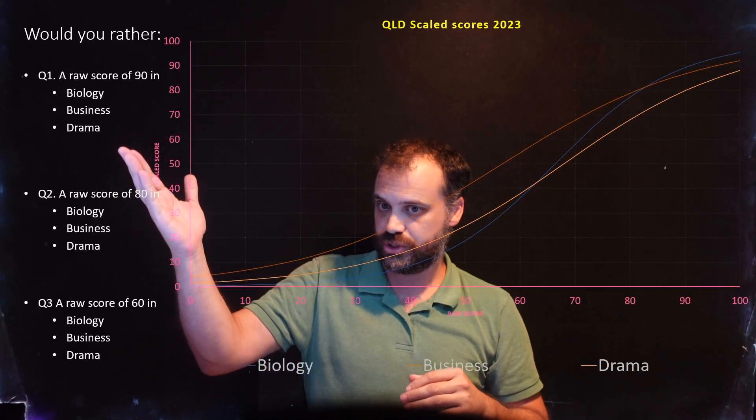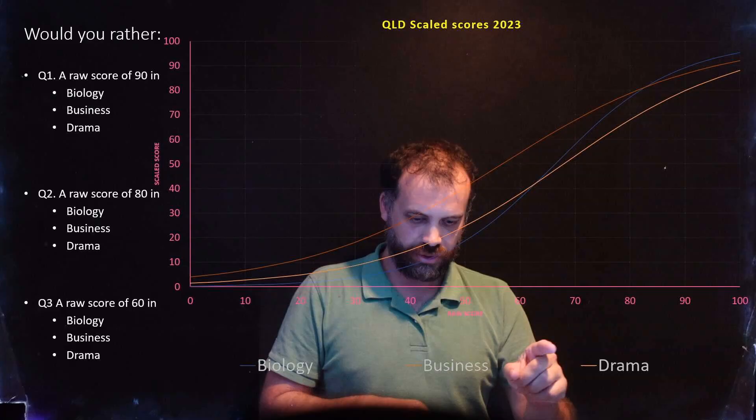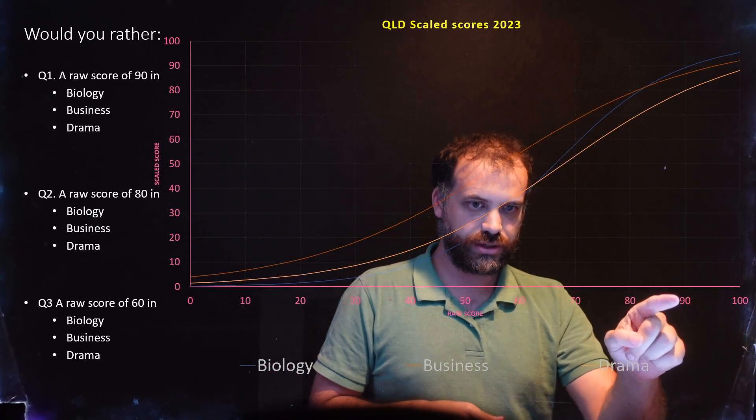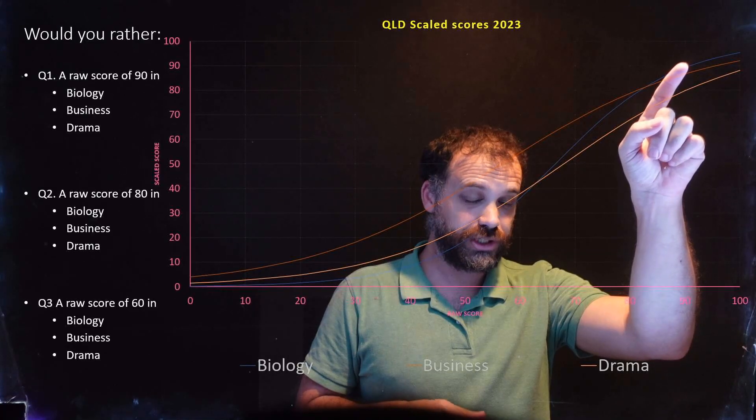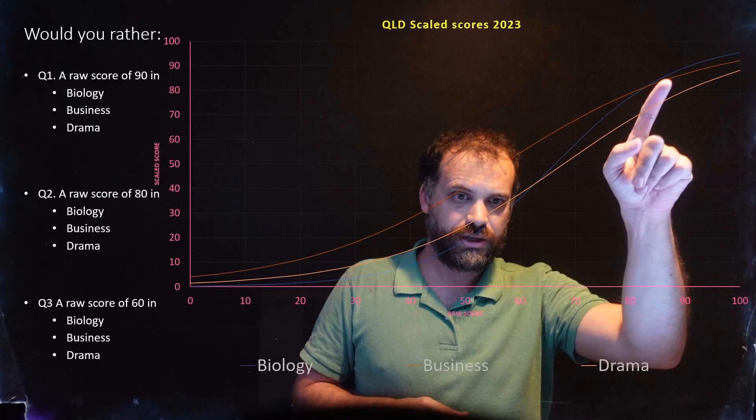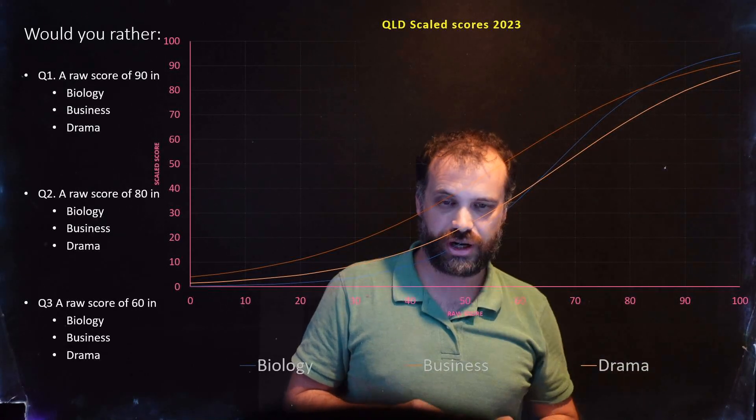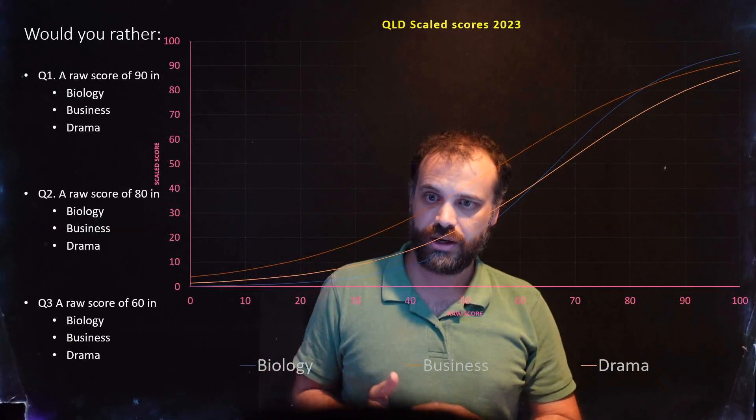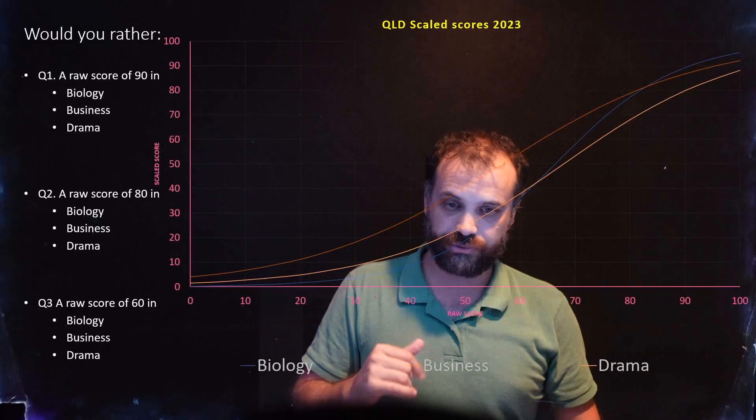So our first question, a raw score of 90 in biology, business, or drama? Well, what we do is go to 90 and move up our line here. Biology is above there because the raw score when you're 90 is very high. Just below that is business, and just below that is drama. So here, I would rather do biology, then business, then drama.